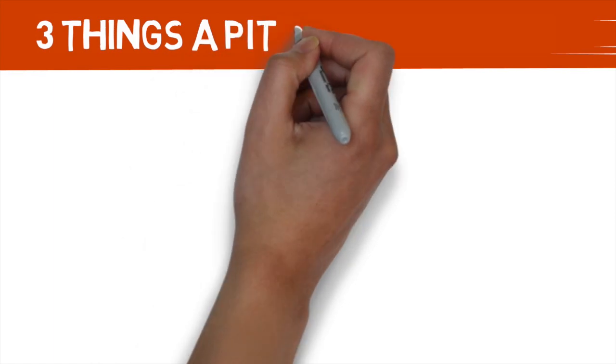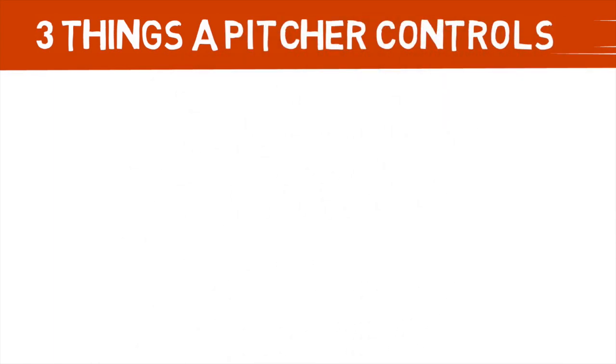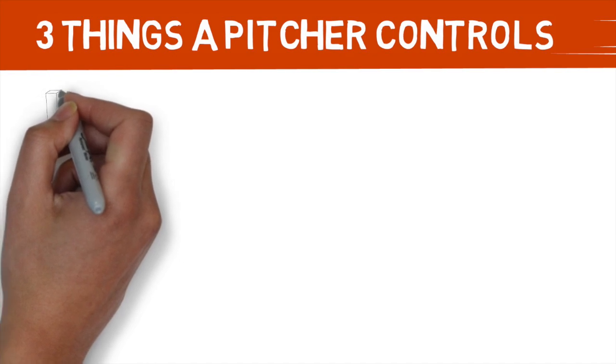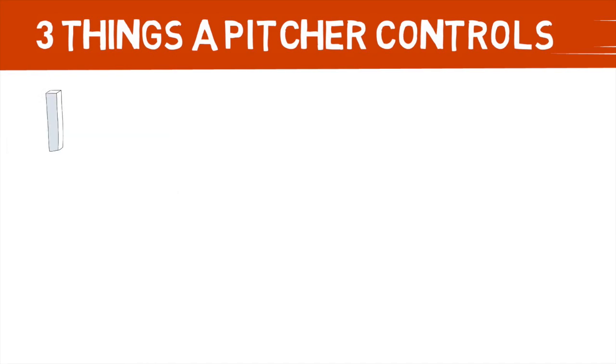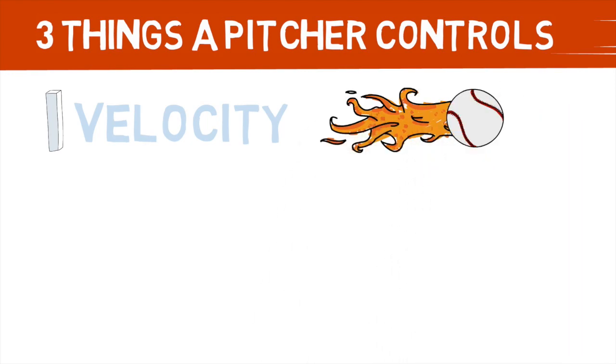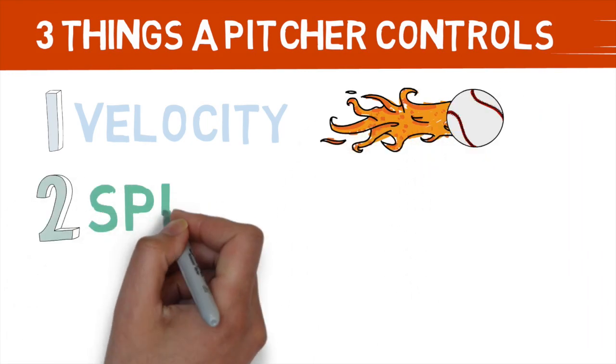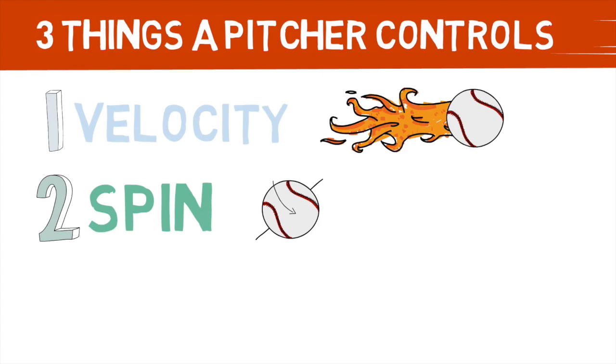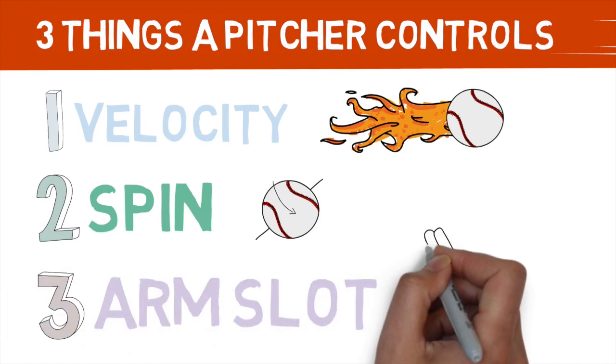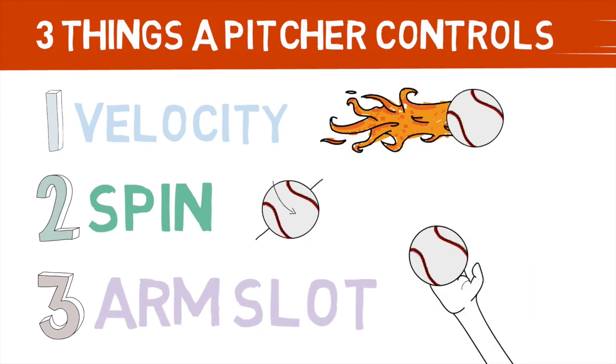There are three things an athlete can manipulate that affect a pitch's movement profile. So those are the three things you should focus on during a pitch design session. These three things are each pitch's velocity, how fast it is, how each pitch spins, and their arm slot throughout all their different pitches. Let's cover what each of those things mean to me.